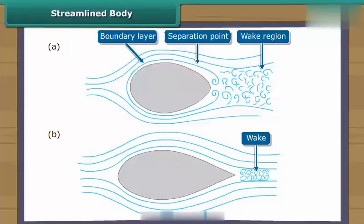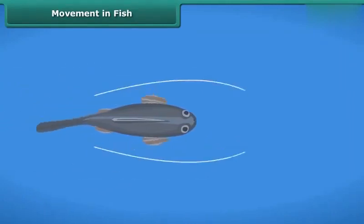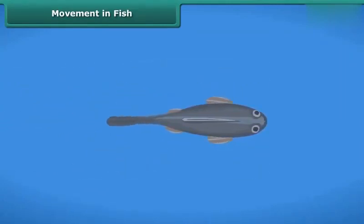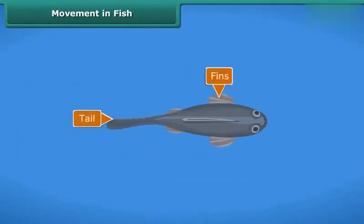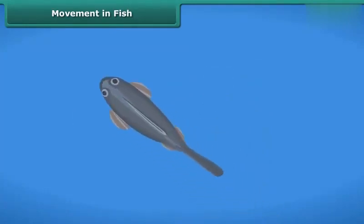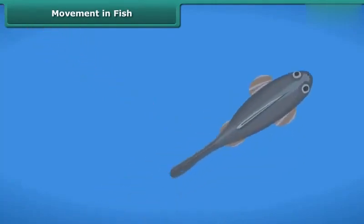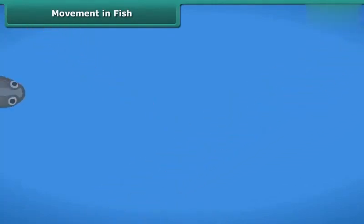The shape of many objects moving through air or water is designed in such a way that friction is reduced between the object and the water or air — this shape is called a streamlined body. Fish have a streamlined body which helps them move fast in water. Fish swim with the help of their fins; the tail moves from side to side and helps the fish swim in the right direction. Some fish move by bending their bodies from one side to another in quick succession, which produces a thrust that helps them move forward.